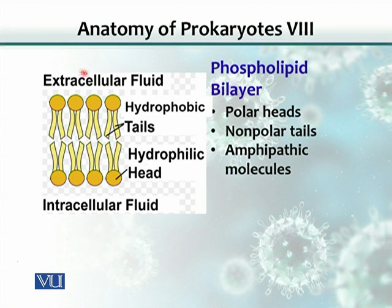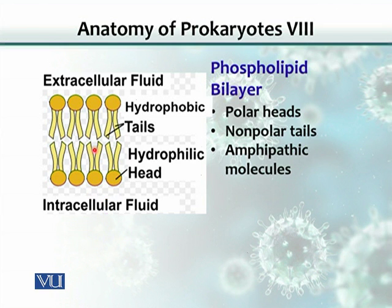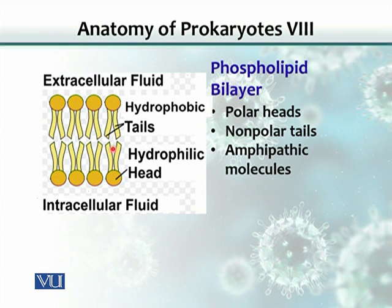On one side, the heads can interact with water outside the cell membrane, and inside the cytoplasm there is also water. So these molecules orient themselves so that the heads face toward the water and the tails face away from it. That is why phospholipid molecules are always found in two layers — it is a matter of their stability and integrity. Molecules that have both hydrophilic and hydrophobic properties are called amphipathic molecules.